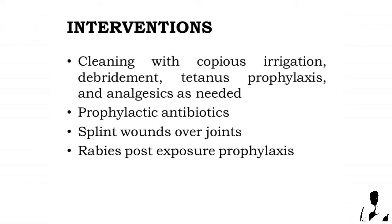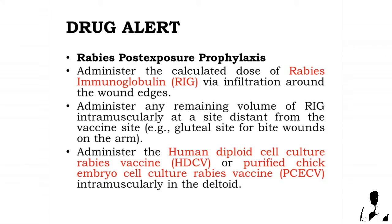Interventions for bites: initial treatment includes cleaning with copious irrigation, debridement, tetanus prophylaxis, and analgesics as needed. Prophylactic antibiotics are used for animal and human bites at risk for infection. Leave puncture wounds open; splint wounds over joints. Rabies post-exposure prophylaxis is an essential component of management. A neurotoxic virus found in the saliva of some mammals causes rabies — if untreated, the condition is fatal. Administer the calculated dose of rabies immunoglobulin (RIG) via infiltration around the wound edges; administer any remaining RIG intramuscularly at a site distant from the vaccine site. Administer the human diploid cell culture rabies vaccine (HDCV) or purified chick embryo cell culture rabies vaccine (PCECV) intramuscularly in the deltoid.